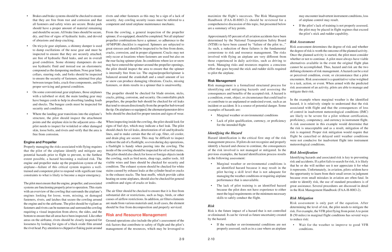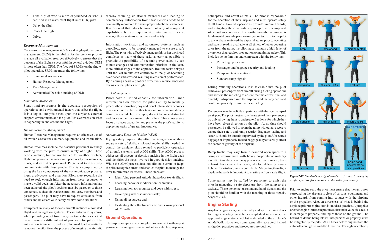Risk mitigation — risk assessment is only part of the equation. After determining the level of risk, the pilot needs to mitigate it. For example, the VFR pilot flying from point A to point B, 50 miles, in marginal flight conditions has several ways to reduce risk: wait for the weather to improve to good VFR conditions, take a pilot who is more experienced or who is certified as an Instrument Flight Rules (IFR) pilot, delay the flight, cancel the flight, or drive.